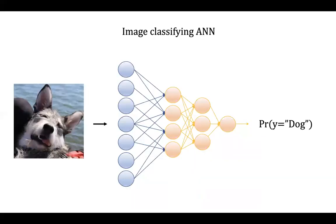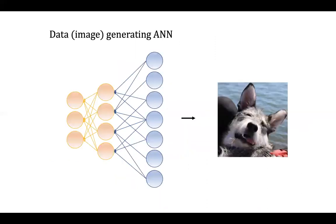So basically what we've been doing so far: we get some dataset — for example an image — and we feed the data points to an artificial neural network and ask it to predict a label, either a categorical label or a real-valued label. Today we're going to discuss a different kind of network where we want to teach the neural network to produce the data itself. For example, if we have images of dogs in our training set, we want to teach the network to produce those kinds of images. These are called generative models because they generate data samples.